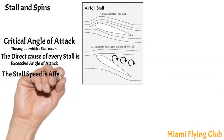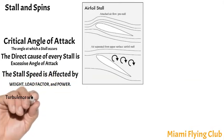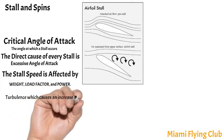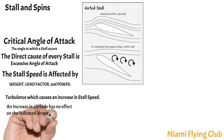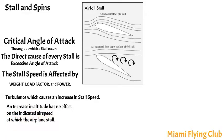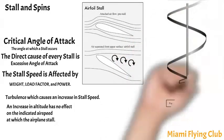The stall speed is affected by weight, load factor, and power. Turbulence causes an increase in stall speed. An increase in altitude has no effect on the indicated airspeed at which the airplane stalls. A spin results when a sufficient degree of rolling or yawing control input is imposed on an airplane in the stalled condition. If the wing is not stalled, spin cannot occur.